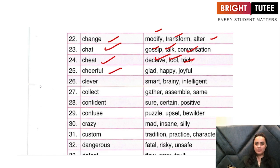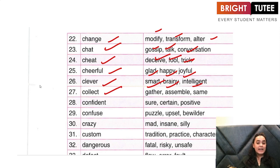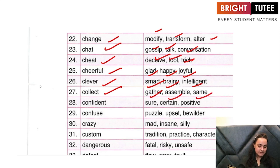'Cheerful' — the synonyms for cheerful: glad, happy, joyful. The synonyms for 'clever' — what are the synonyms for clever? Smart, brainy, intelligent. 'Collect' — the other words for collect: gather, assemble, or save. To gather something, assemble something — these are the other words for collect.